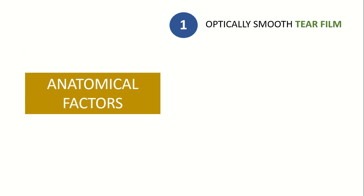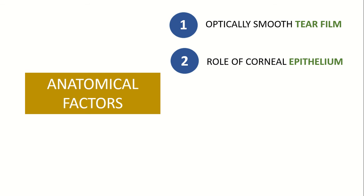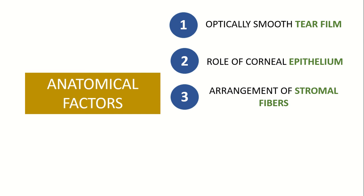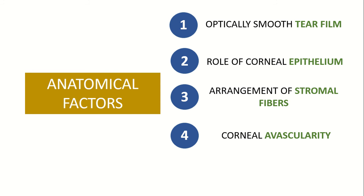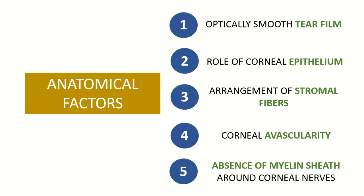Number one is the presence of optically smooth tear film. Secondly, the composition of the corneal epithelium. Thirdly, specific arrangement of stromal fibers. Number four is corneal avascularity. And lastly, the absence of myelin sheath around corneal nerves.